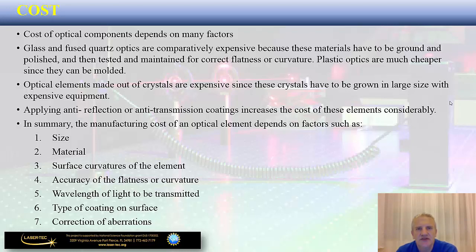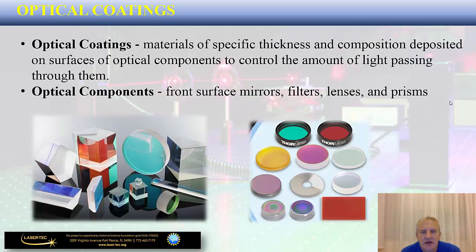As a photonics technician, you must know these different aspects to make a sound decision during the selection process. The optical components you may encounter in a photonics lab — mostly made of transparent materials like glass, fused quartz, or plastic optics — include front surface mirrors, filters, lenses, and prisms. Many have specific optical coatings shown in different colors on diagrams, representing the coating deposited on their surfaces.